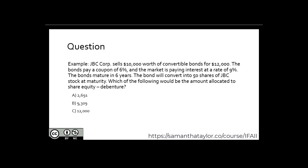Let's look at a question. JVC Corp. sells $10,000 worth of convertible bonds for $12,000. The bonds pay a coupon of 6%, and the market is paying interest at a rate of 9%. These bonds mature in 6 years. The bonds will convert into 50 shares of JVC stock at maturity. Which of the following would be the amount allocated to share equity for the debenture?